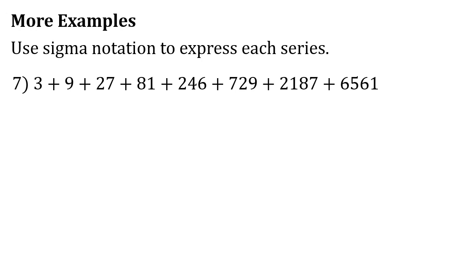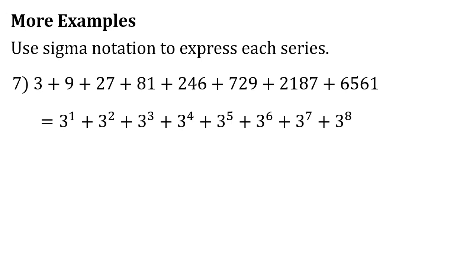For number 7, the series is 3 plus 9 plus 27 plus 81 plus 243 plus 729 plus 2,187 plus 6,561. The base is 3 and the exponent changes from 1 to 8, giving us 3¹ plus 3² plus 3³ plus 3⁴ plus 3⁵ plus 3⁶ plus 3⁷ plus 3⁸. We can express this as the sum of 3 to the n as n goes from 1 to 8.